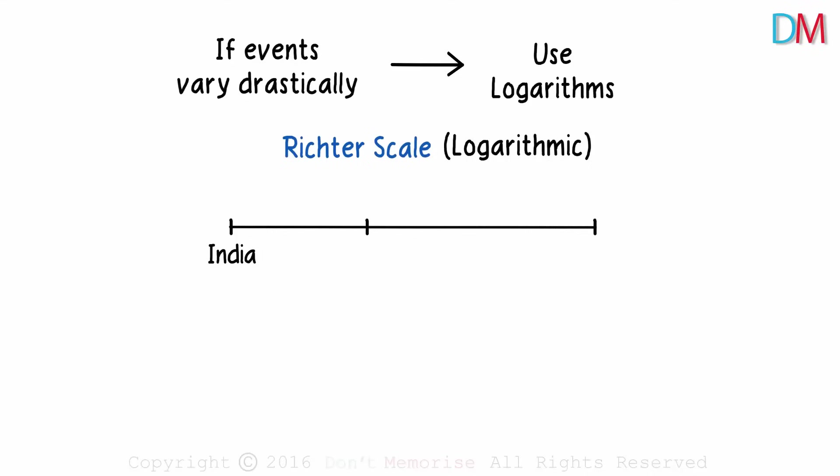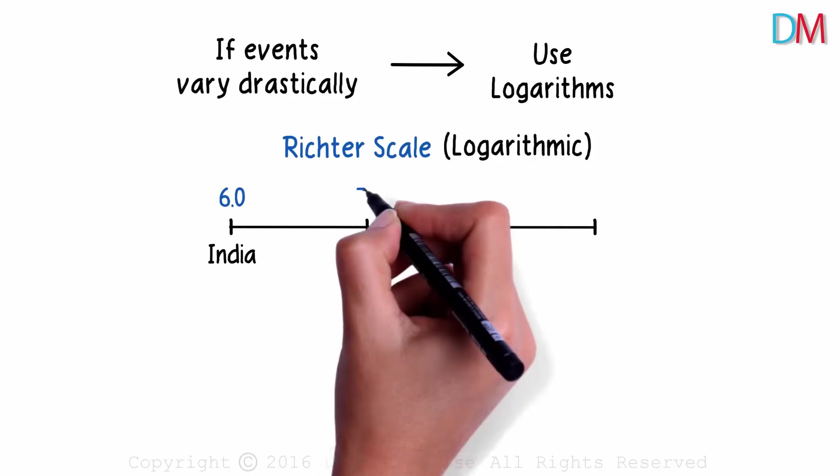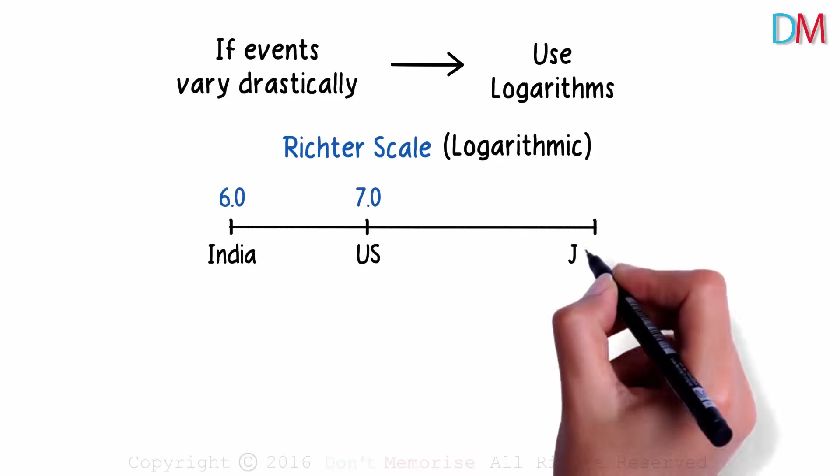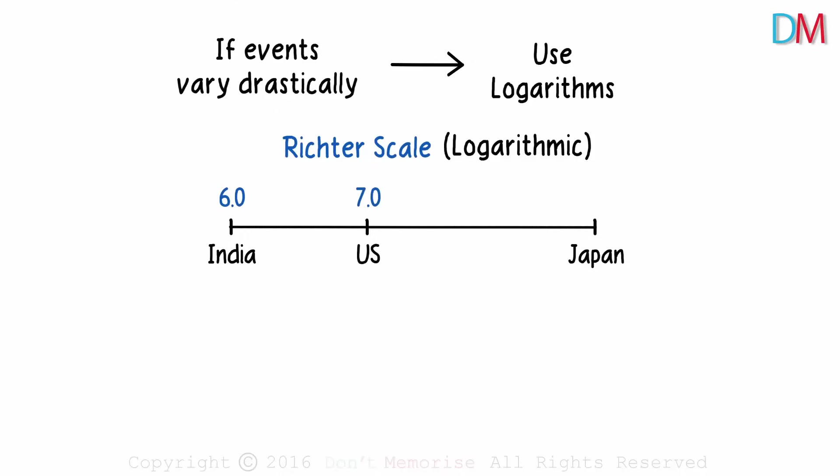In India, there was an earthquake that registered a 6.0 on the Richter scale. In the US, there was an earthquake that registered 7.0. And Japan had an earthquake that registered a 9.0 on the Richter scale.